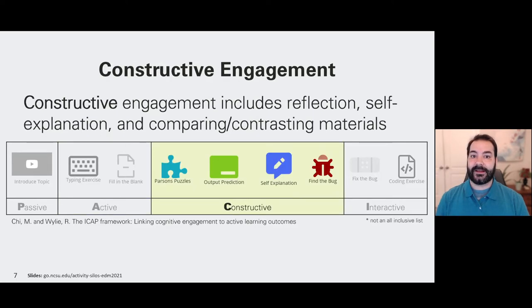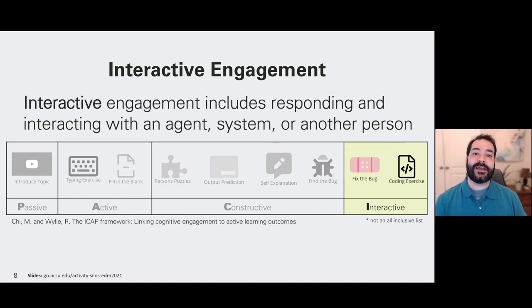We can go even further by adding in more engagement into a constructive activity. Something like an output prediction shows a snippet of code to students and they must process what that code does and then say here is what is going to be outputted if you were to execute this code. Finally, we have interactive engagement, and this is where the standard computer programming exercise comes into play. Students are given a prompt and they must figure out a solution and implement that solution using a programming language, but they may not get the answer correct the first time. And so the feedback that they're receiving from the system or even an instructor creates more of an interactive activity.